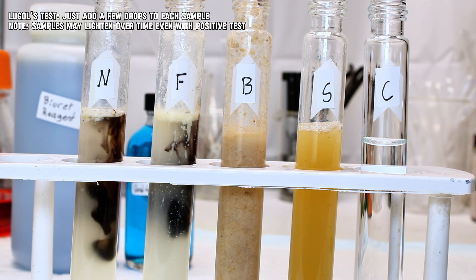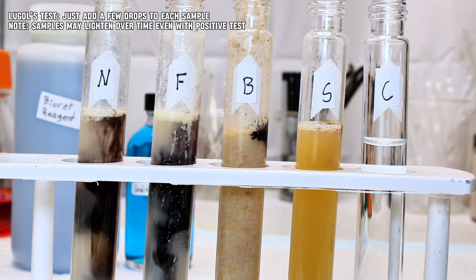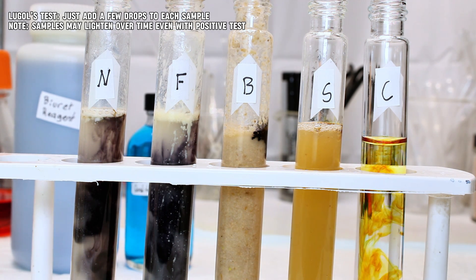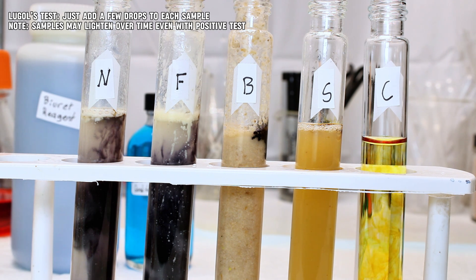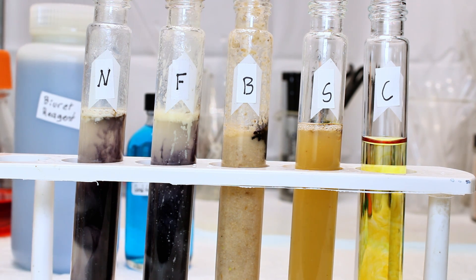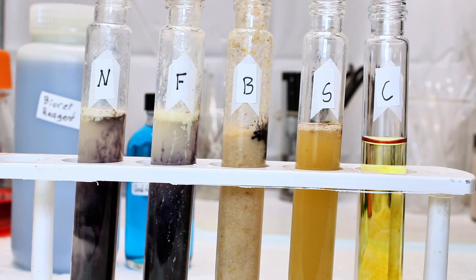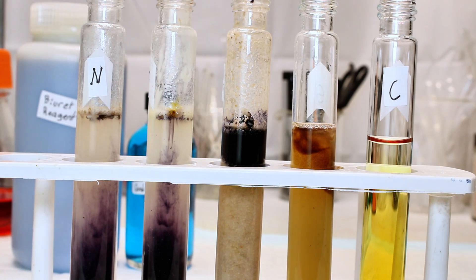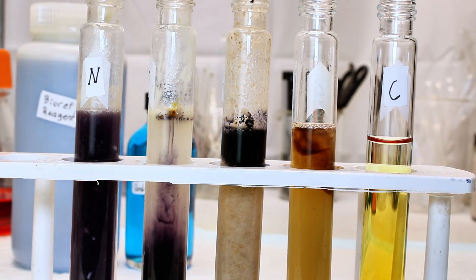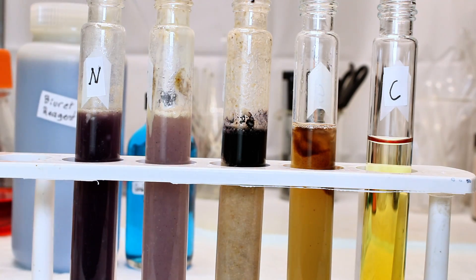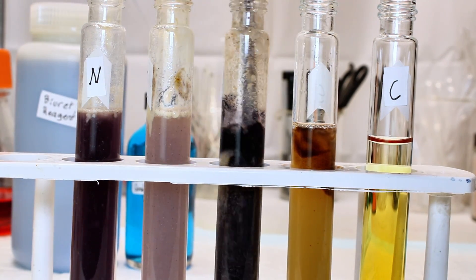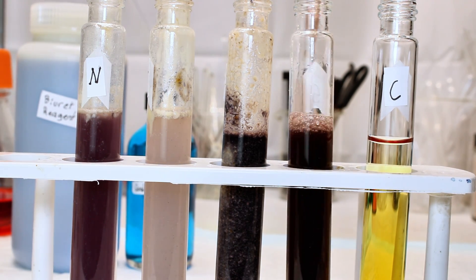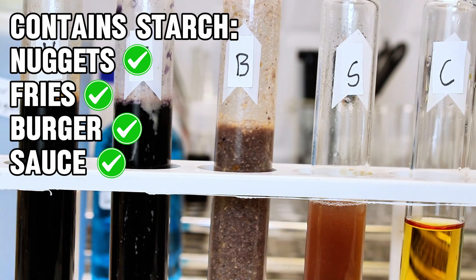When I added the triiodide solution to the chicken nuggets, there was an immediate and distinct darkening indicating a positive test for starch, which probably comes from the breading. The fries had the most clearly positive result, as potatoes are mostly starch in water. The test on the burger was also clearly positive, along with the sauce. I can't really explain why the burger contains starches unless they use potato buns, but the sauce probably tested positive because starch is often used as a thickening agent in sauces that aren't particularly thick on their own.